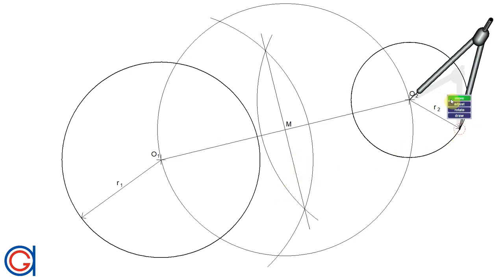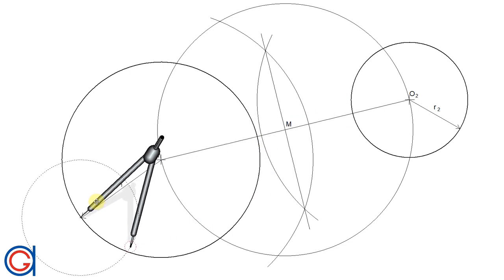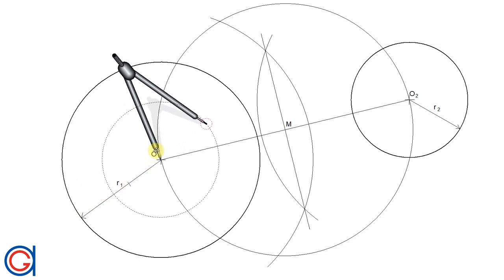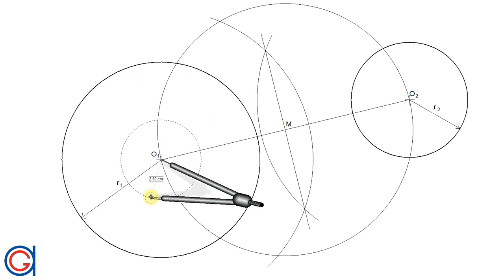The next step is to subtract radius R1 from radius R2. To do this, setting our compass on the length R2, we transport it onto the extremity of radius R1. The distance left between the new point to the center point O1 is the difference between radius R1 and radius R2.